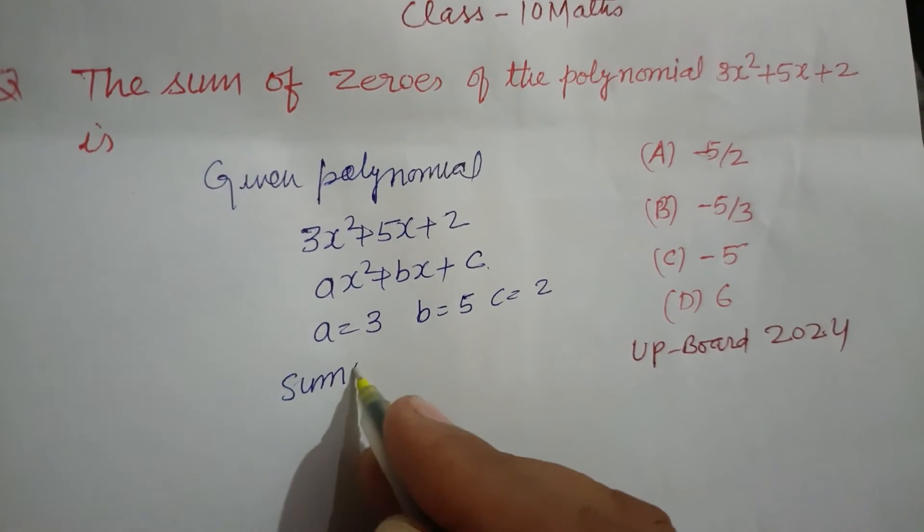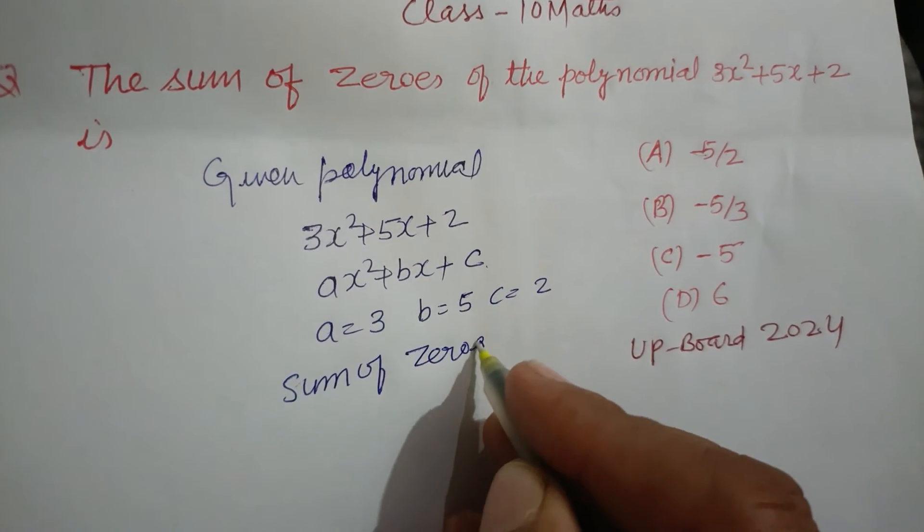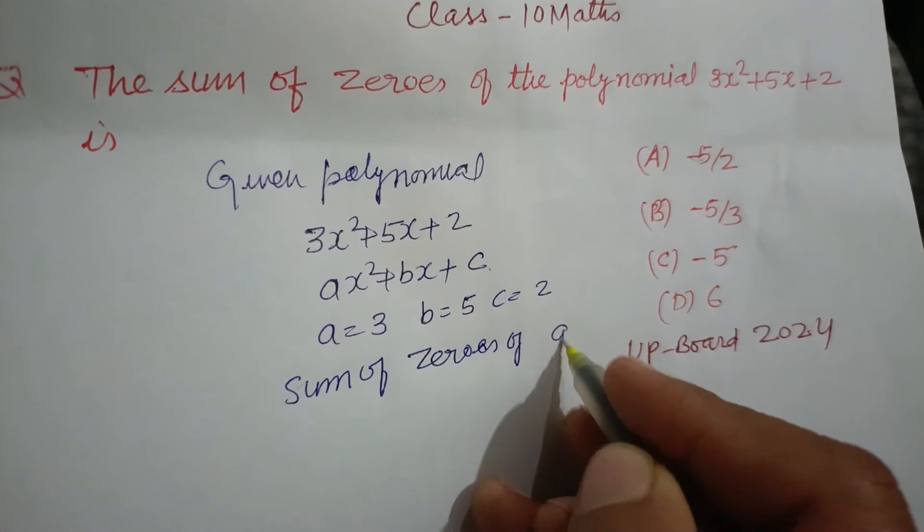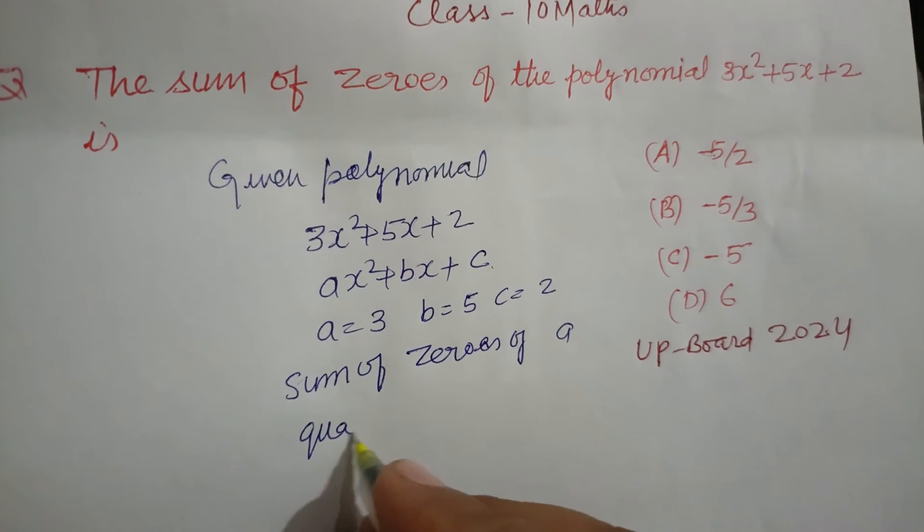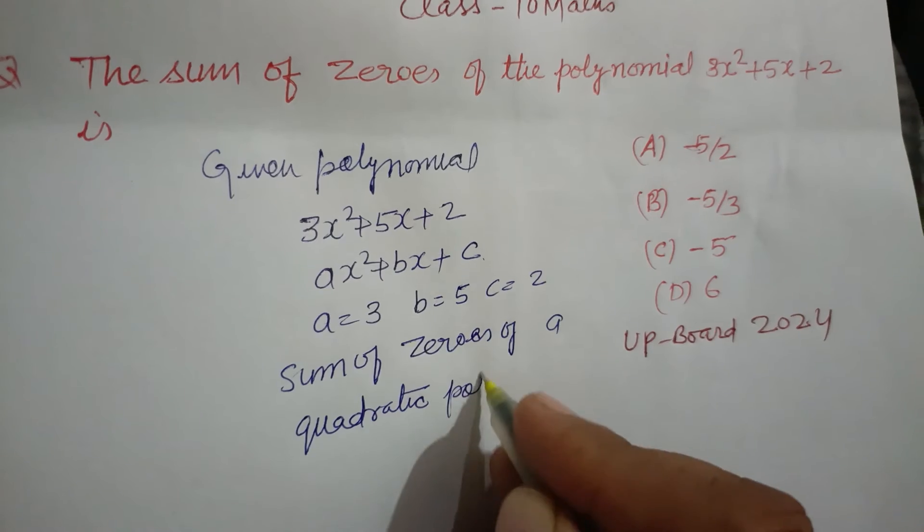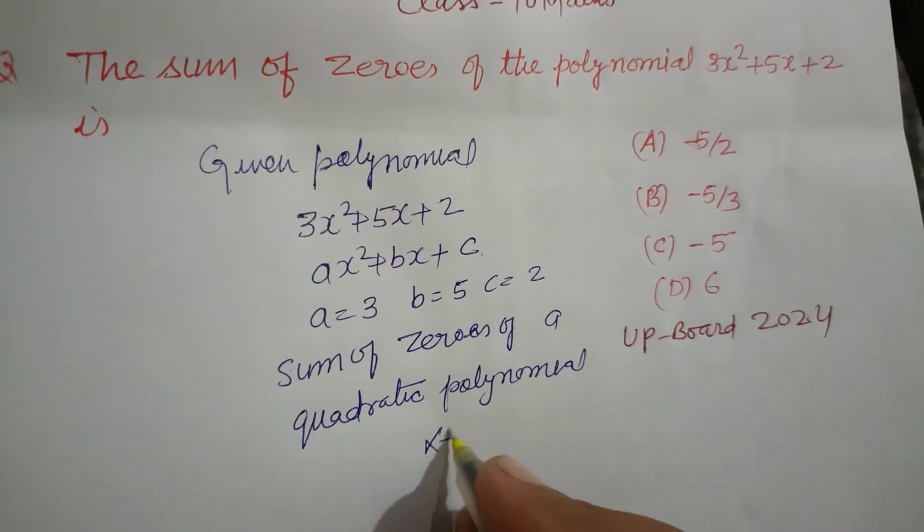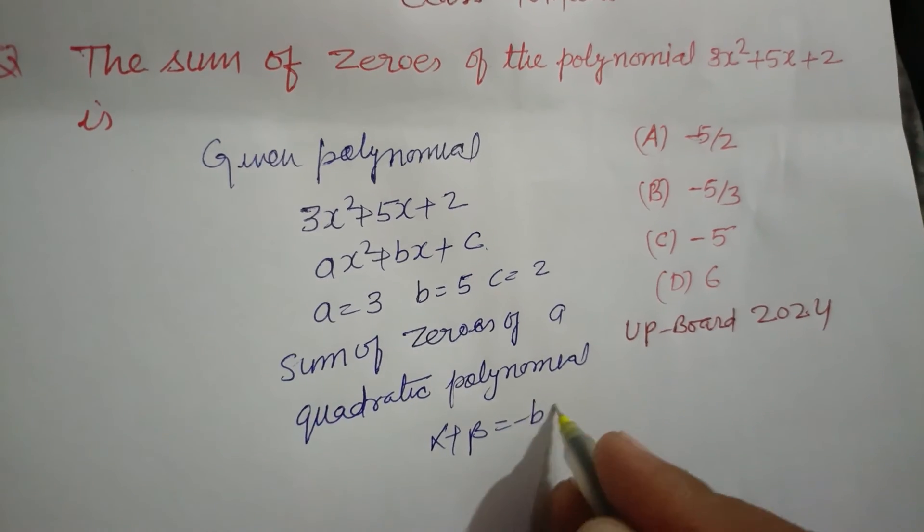Sum of zeros of a quadratic polynomial: alpha plus beta equal to minus b over a.